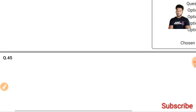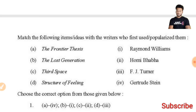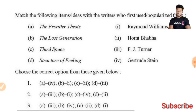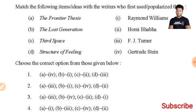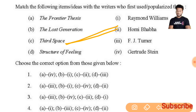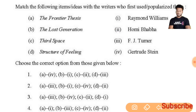Question 45: Match the following ideas with the writers who first used or popularized the terms. 'Third space' has been given by Homi K. Bhabha, giving C-2-second. C-2-second appears in the first and third options. 'Lost generation' was given by Gertrude Stein, giving B-2-4. B-2-4 is in the third option — so the right answer is the third option.